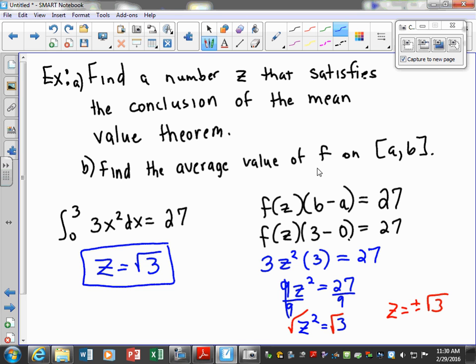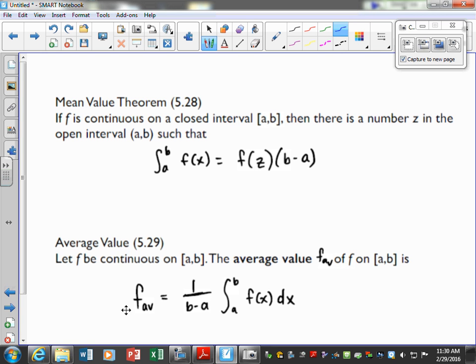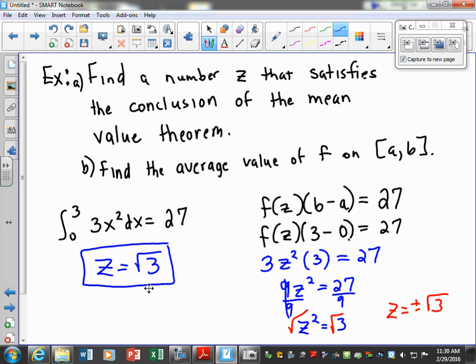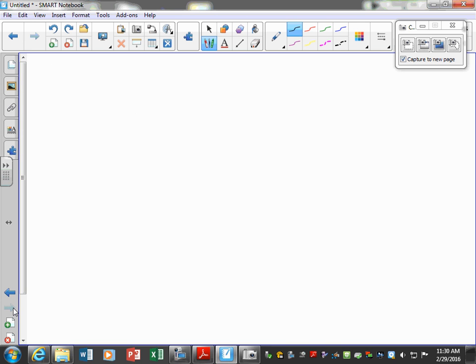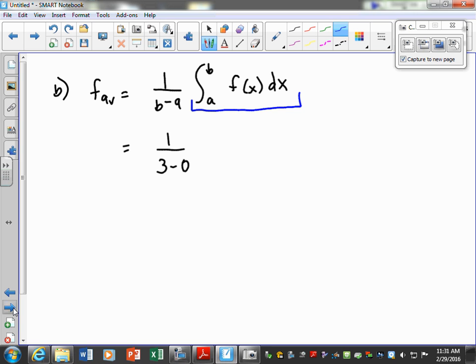So part b says find the average value of f on a to b. Just to remind you, I'm going to take this formula, write it down and work the next part of that given problem. For part b, our average value is going to be 1 over (b - a) times the integral of f(x) dx. Our b in this one was 3, our a was 0, and this entire piece was given to me. What was our value for that? Just 27.